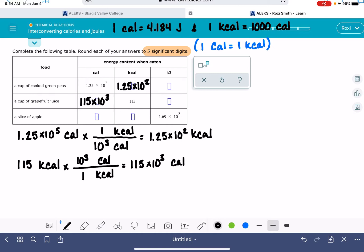So let's go back up to our cooked green peas. 1.25 times 10 to the 5th calories. We're going to convert that into joules using this conversion factor right here. Calories down on the bottom, joules up on top, 4.184 joules per calorie. I need to use my calculator for this. 1.25 times 10 to the 5th times 4.184. That gives me 5.23 times 10 to the 1, 2, 3, 4, 5 joules.